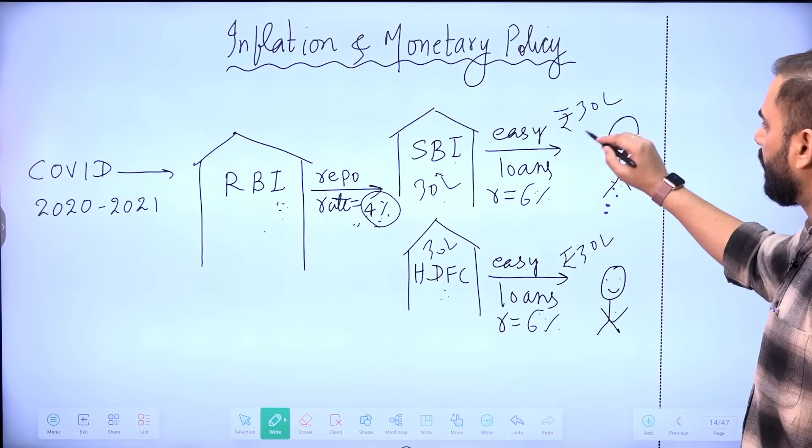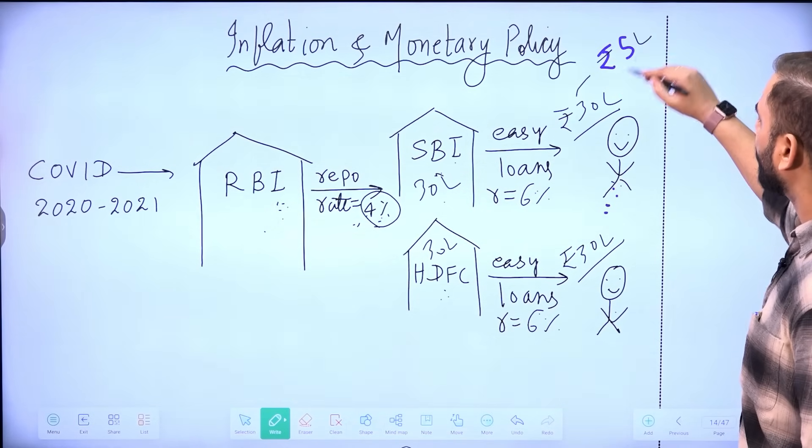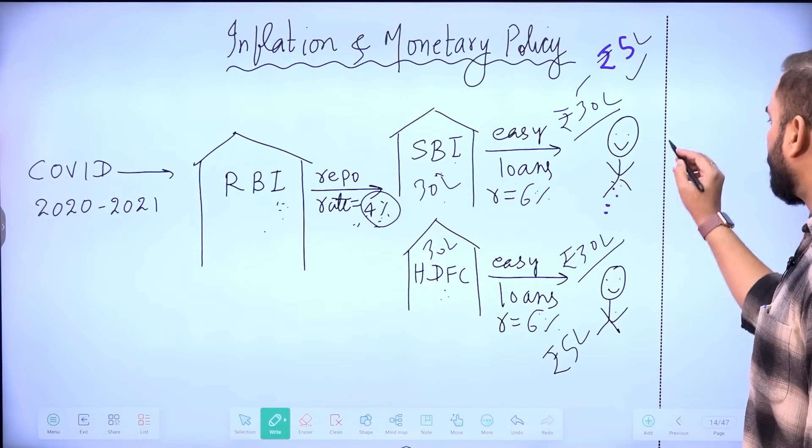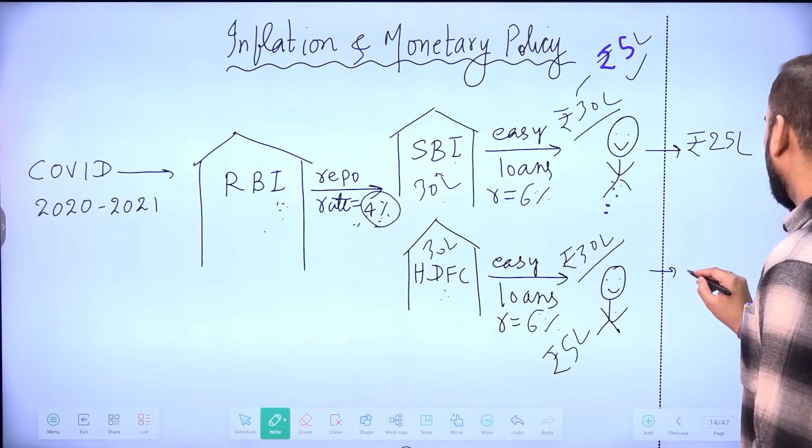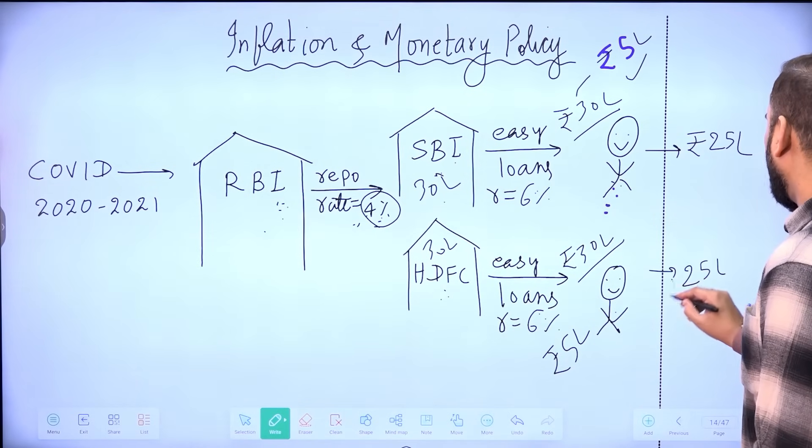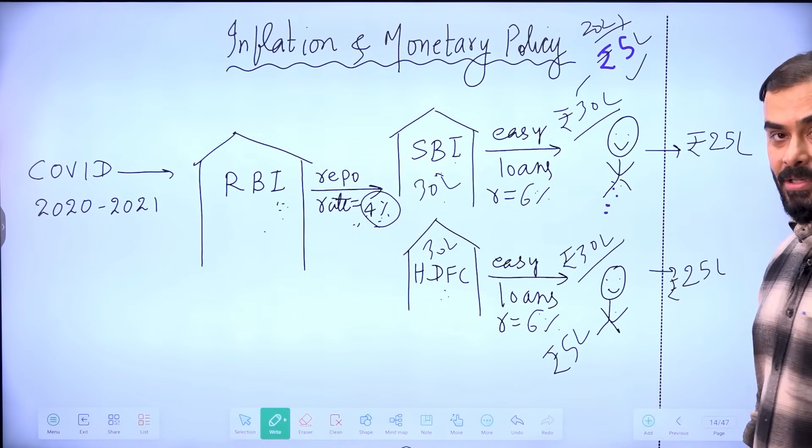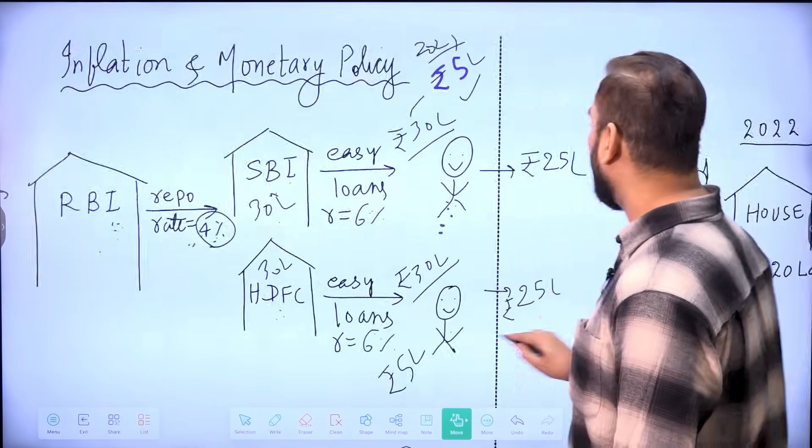And you understood that whenever RBI gives loan to SBI and HDFC, they charge a rate of interest called repo rate, which was very low at that time, 4%. So at 6%, people were getting loan. This is the story of 2020 and 21. Now when people got loan from this 30 lakh rupees, suppose that people spent 5 lakh rupees on their health expenditure. 5 lakh rupees spent. So how much money is remaining with public now? 25 lakh rupees. 25 lakh rupees remained with public. So year 2021 is gone. Now comes year 2022.